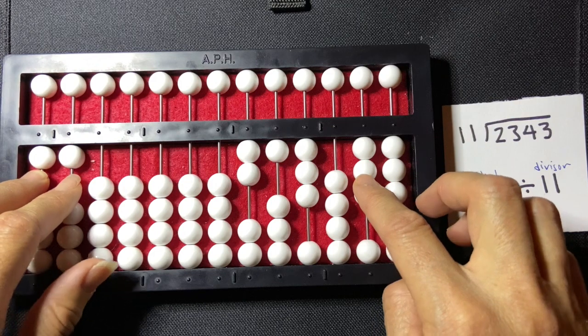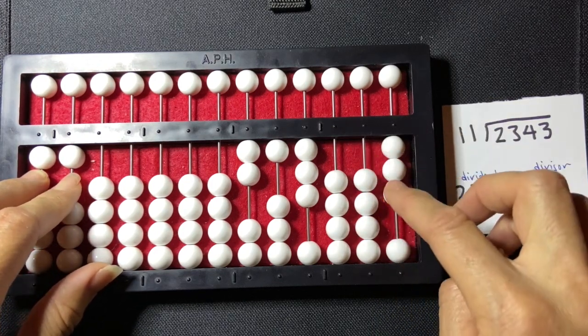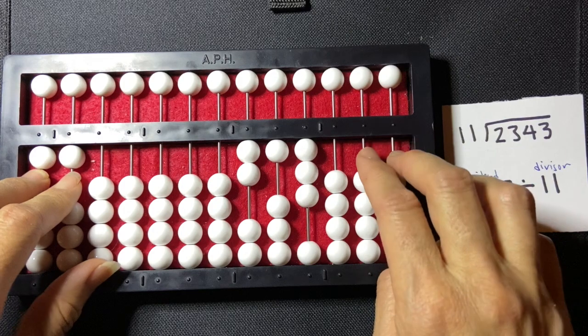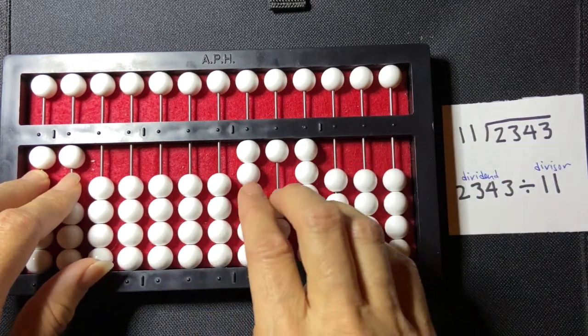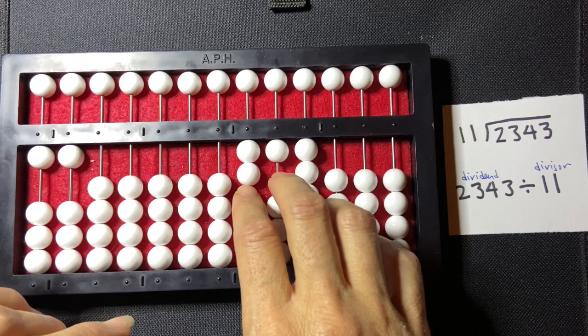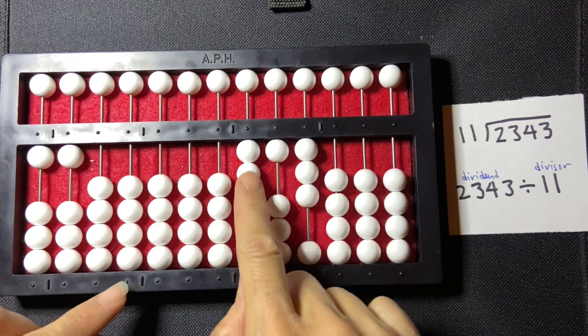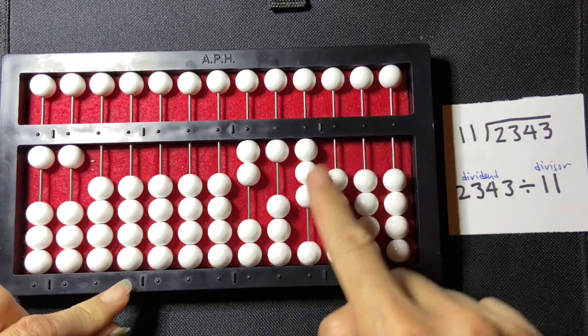3 times 11 is 33, so I'm going to minus 30. 1, 2, 3, 30, and 3, 1, 2, 3. And I read my quotient now, and that's 213.